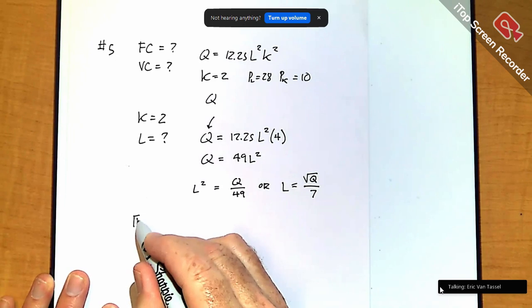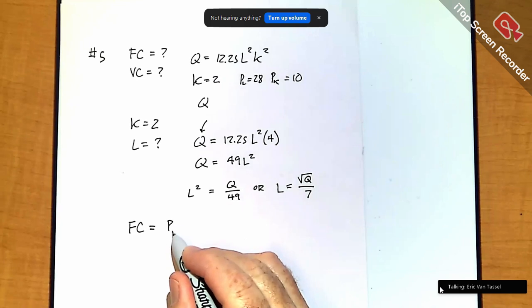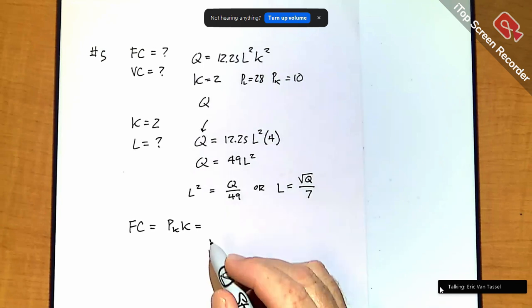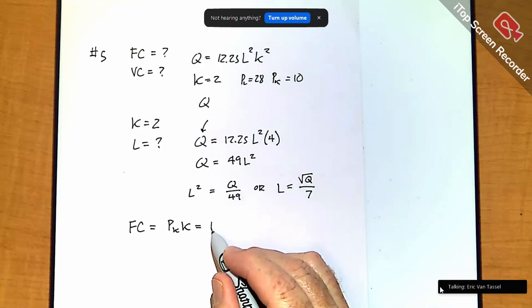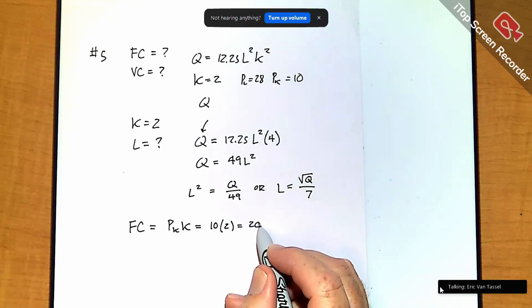So, the fixed cost is going to be the cost that you pay even if you don't produce anything. So, if Q is 0, you're looking at P_K times K. So, that capital's fixed. P_K is 10, and K is 2. So, fixed cost should be $20.